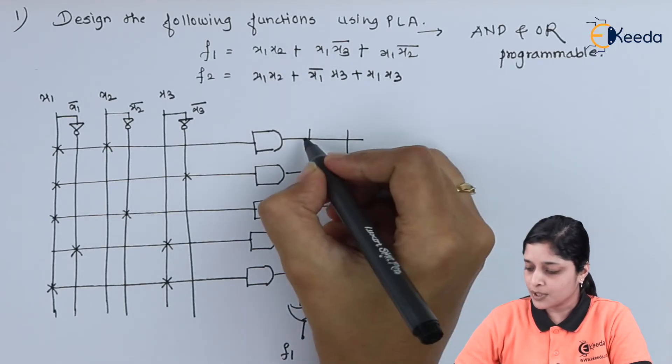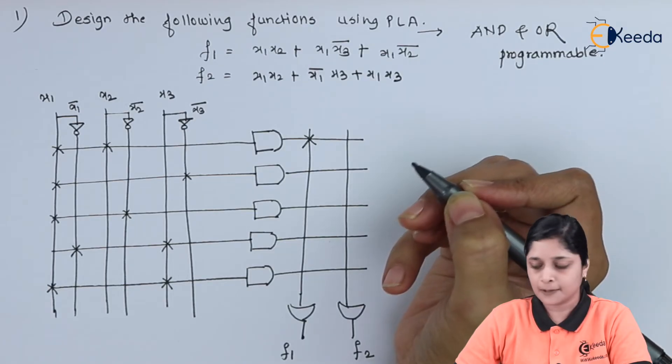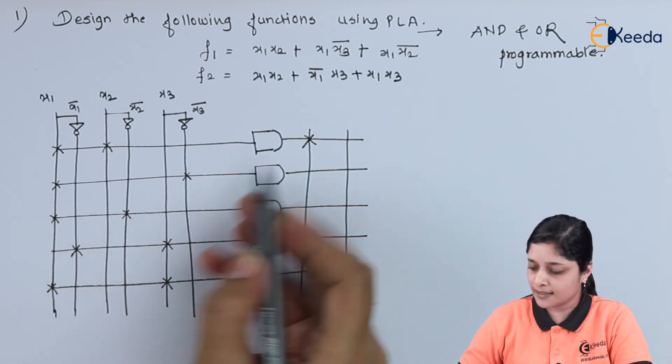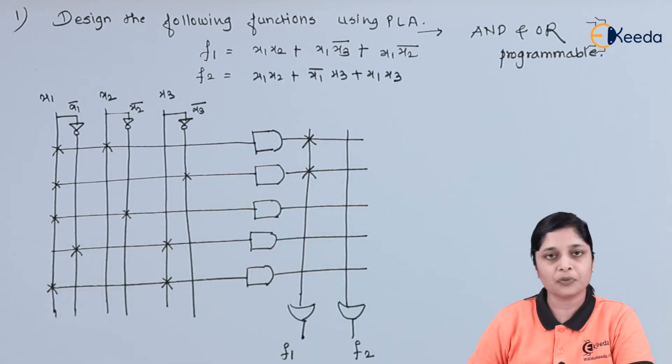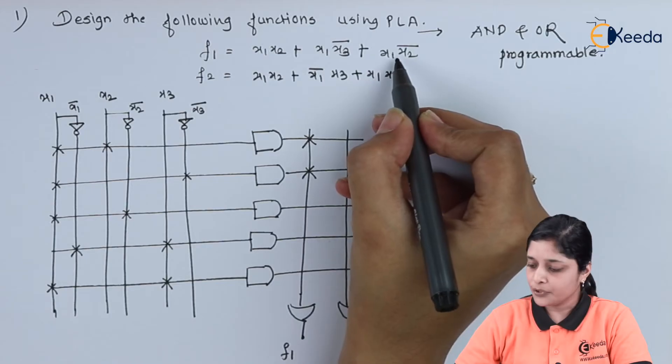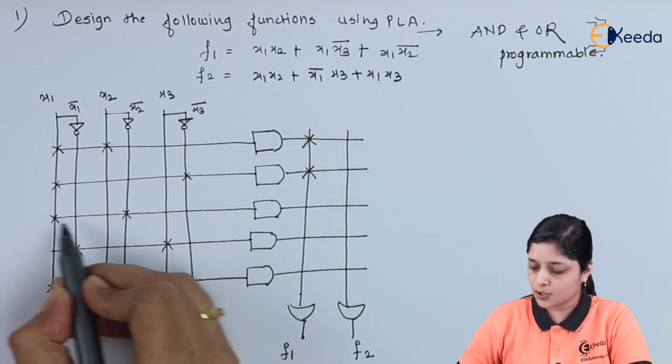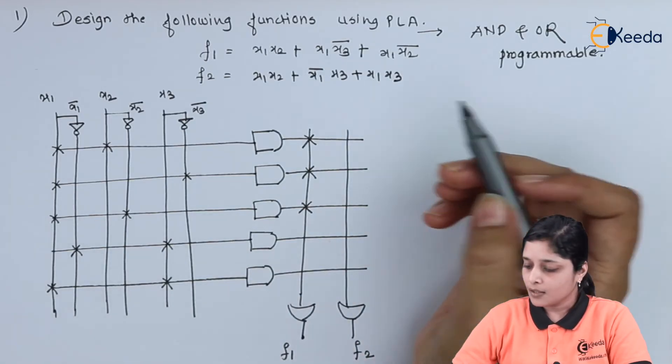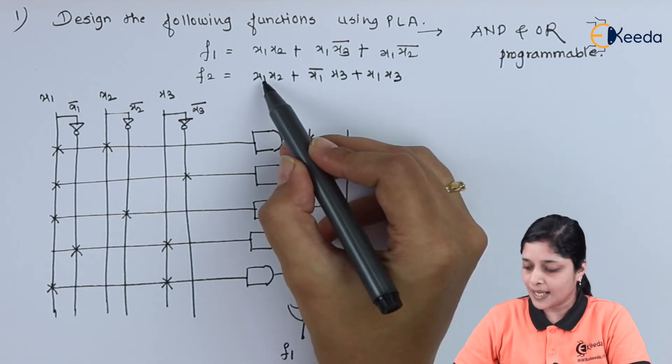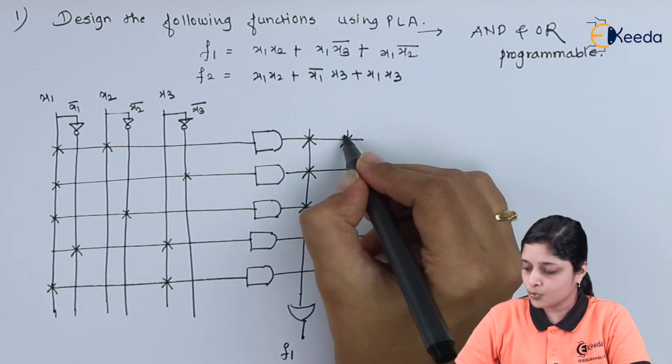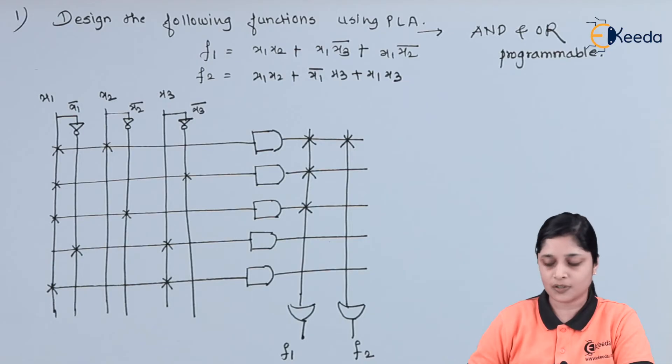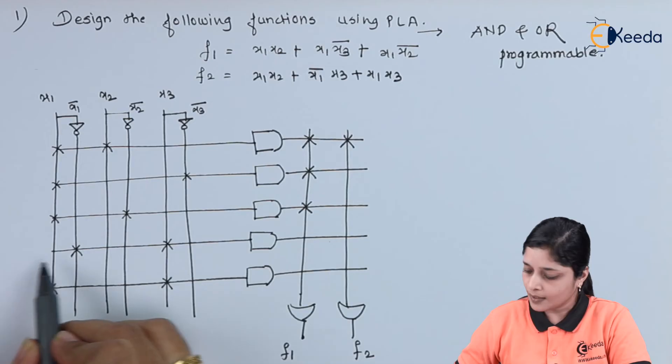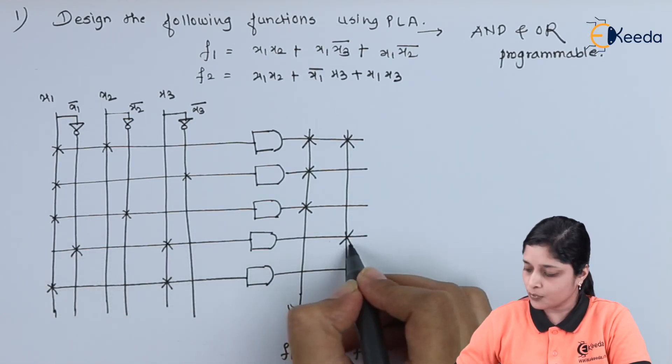We want x1 x2, that is this term, so we will mark a cross sign. Then x1 x3 bar, so we have x1 x3 bar, so again we make a cross mark. Now for f2, what we will write: x1 x2, so this way we want to make a cross. x1 bar x3, so here x1 bar x3, so we want this term.